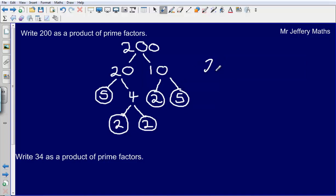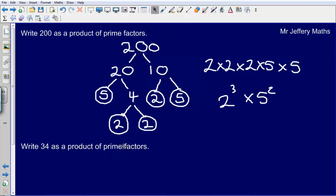So my answer here is simply going to be 2 times 2 times 2 times 5 times 5. If I want to tidy this up a little bit, I could say that this is the same as 2 cubed times by 5 squared. And if you use the prime factor button on your calculator, it will give it to you in index form.